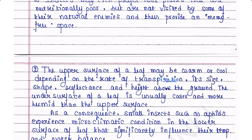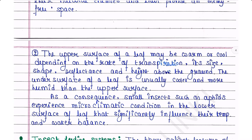The upper surface of a leaf may be warm or cool depending on the rate of transpiration, its size, shape, reflectance, and height above the ground. The undersurface of a leaf is usually cooler and more humid than the upper surface. As a consequence, small insects such as aphids prefer the lower surface of a leaf, which significantly influences their temperature and water balance.